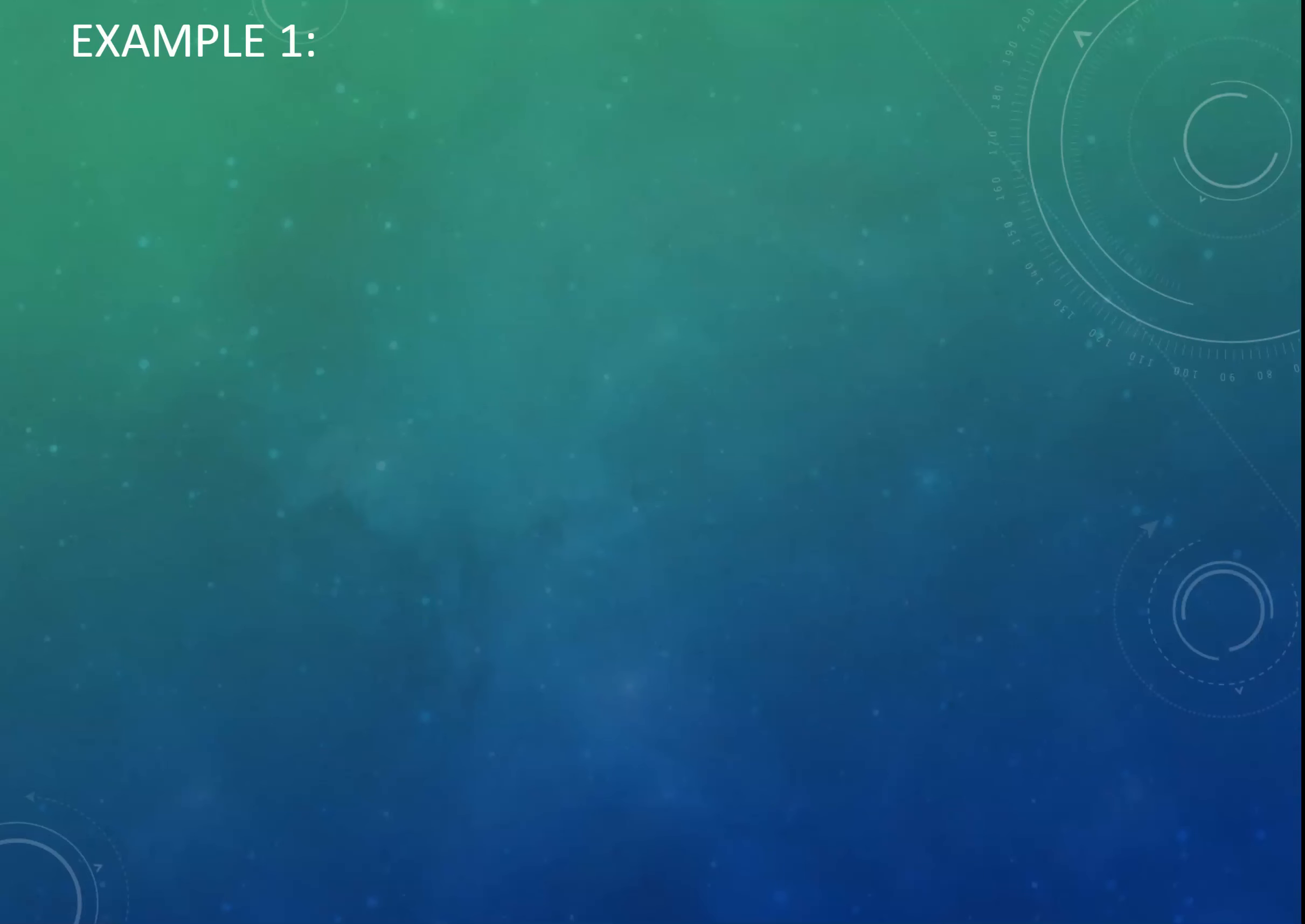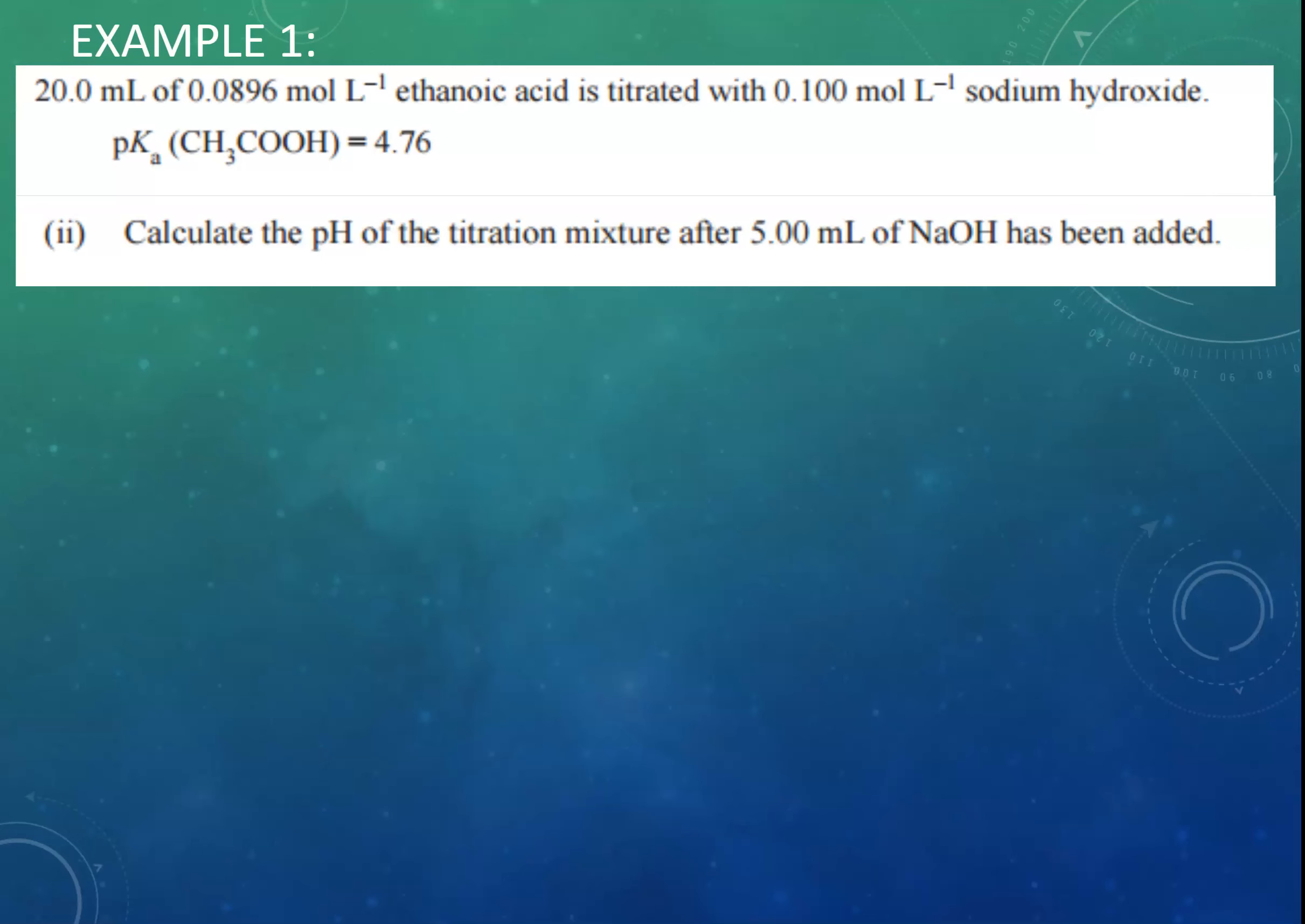So, here's an example, again from an NCEA exam paper. We have 20 mL of ethanoic acid, and it's titrated against 0.1 mol per litre sodium hydroxide. And the question is asking you to determine the pH once you've added 5 mL of sodium hydroxide. So, very clearly, we've added 5 mL of sodium hydroxide. So, the total volume of our solution is now 25 mL. Please keep that in mind.